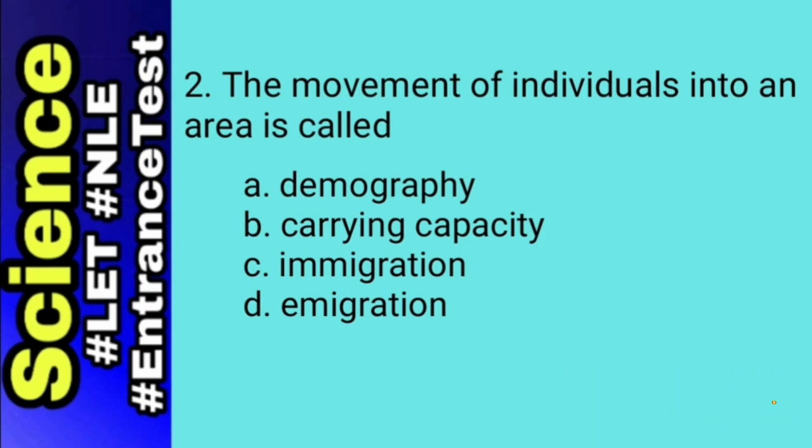Letter C, immigration refers to the movement of individuals into its range from elsewhere. And lastly, emigration is the movement of individuals out of the population's range. Thus, the answer for number 2 is letter C, immigration.